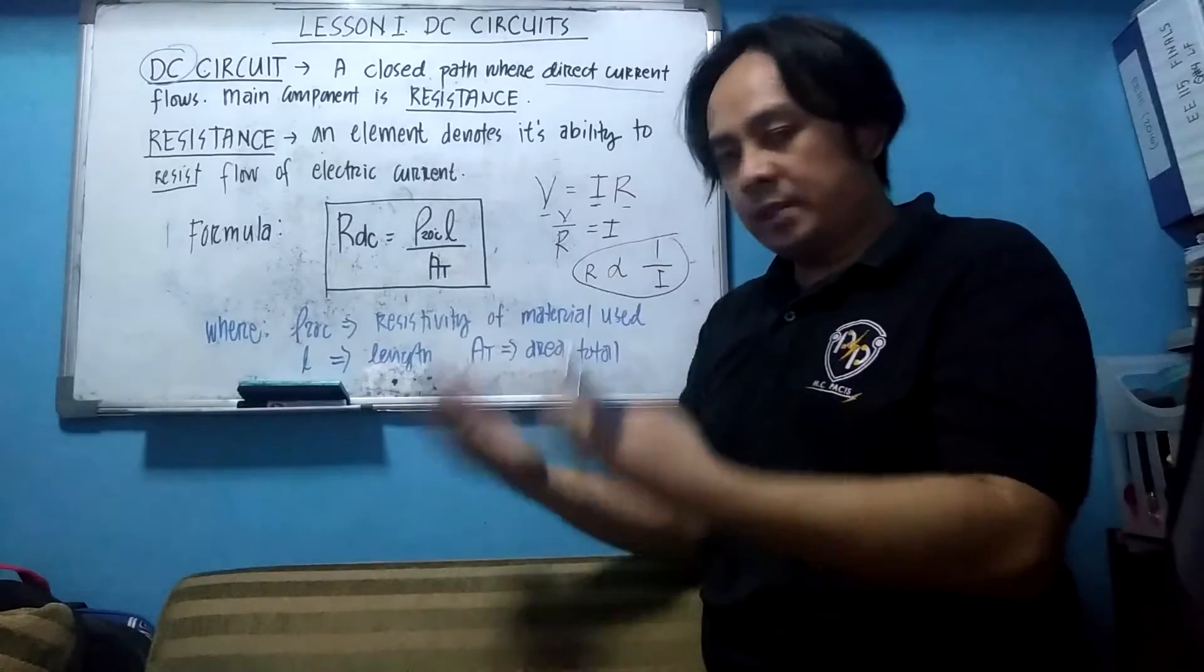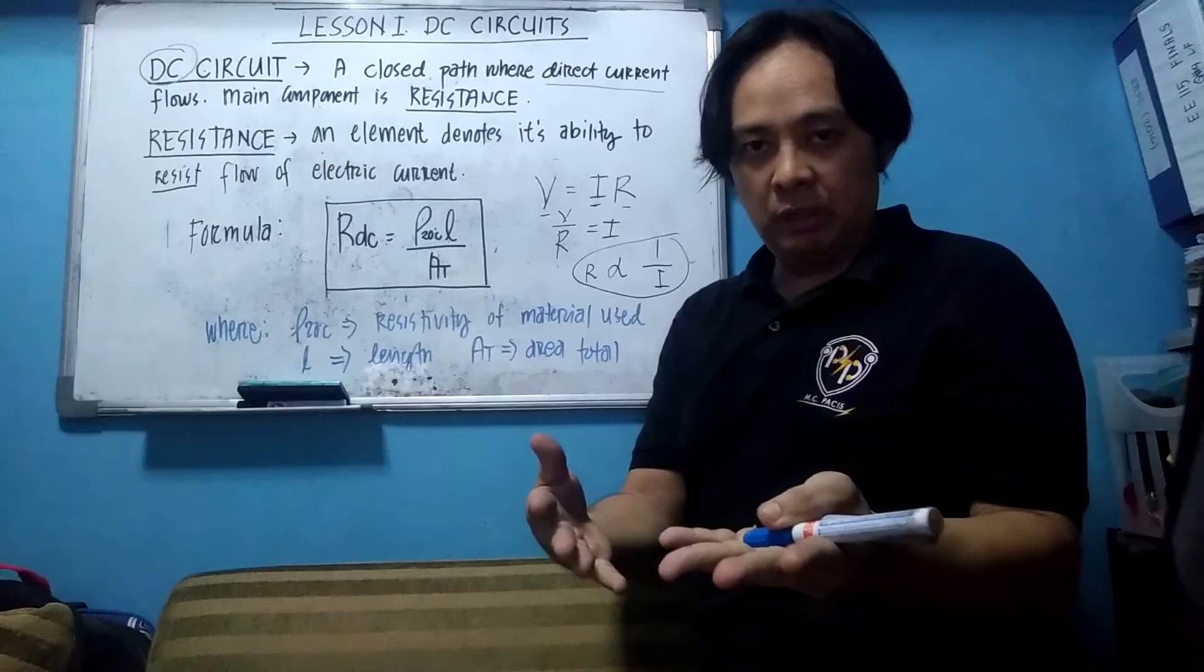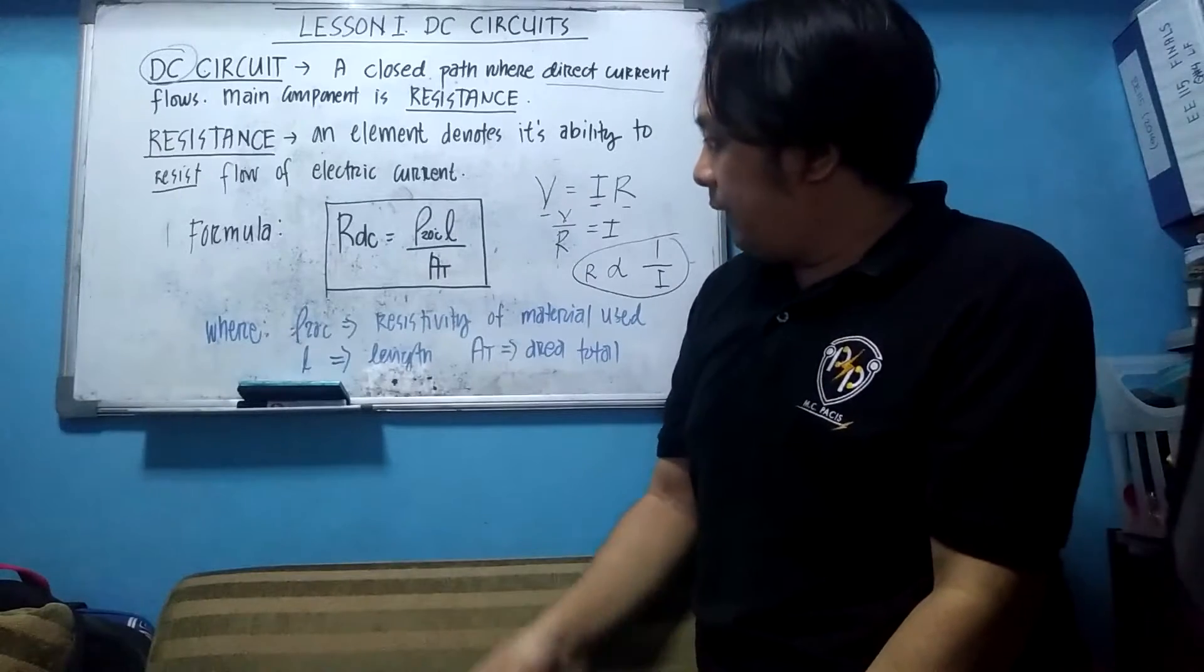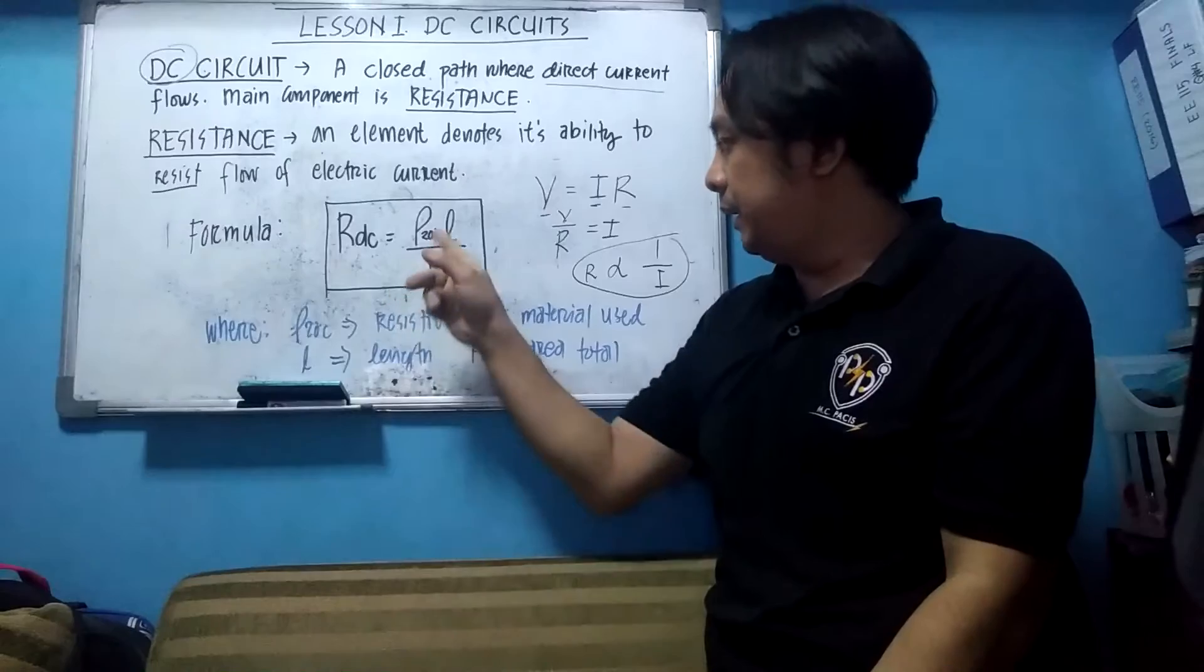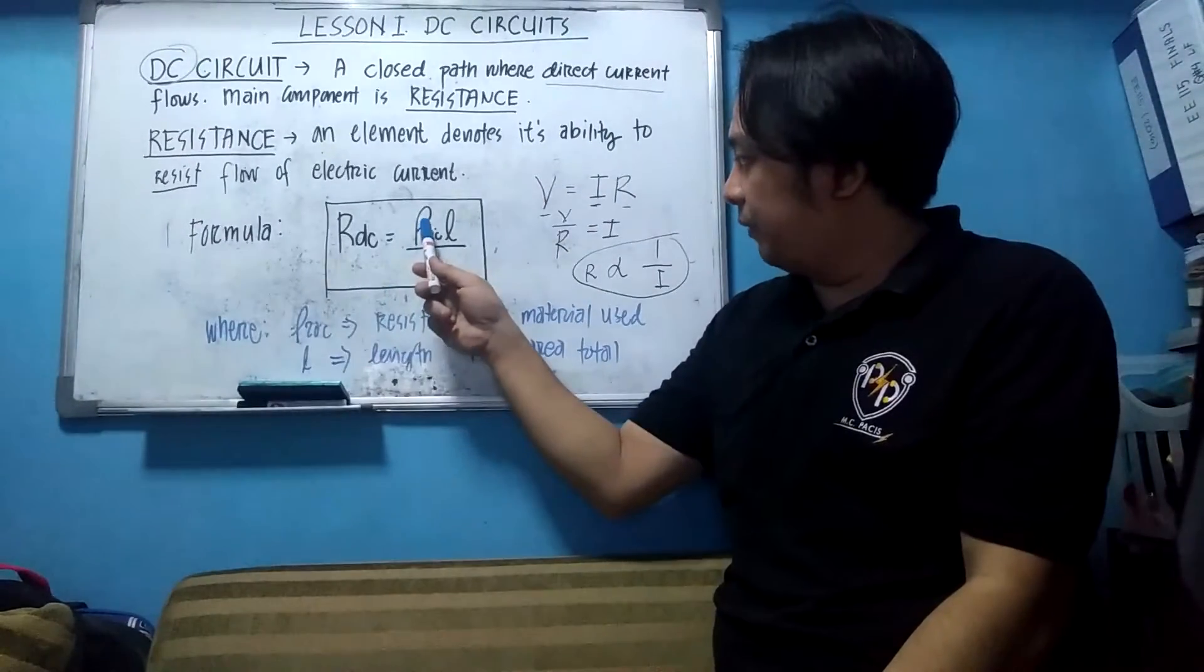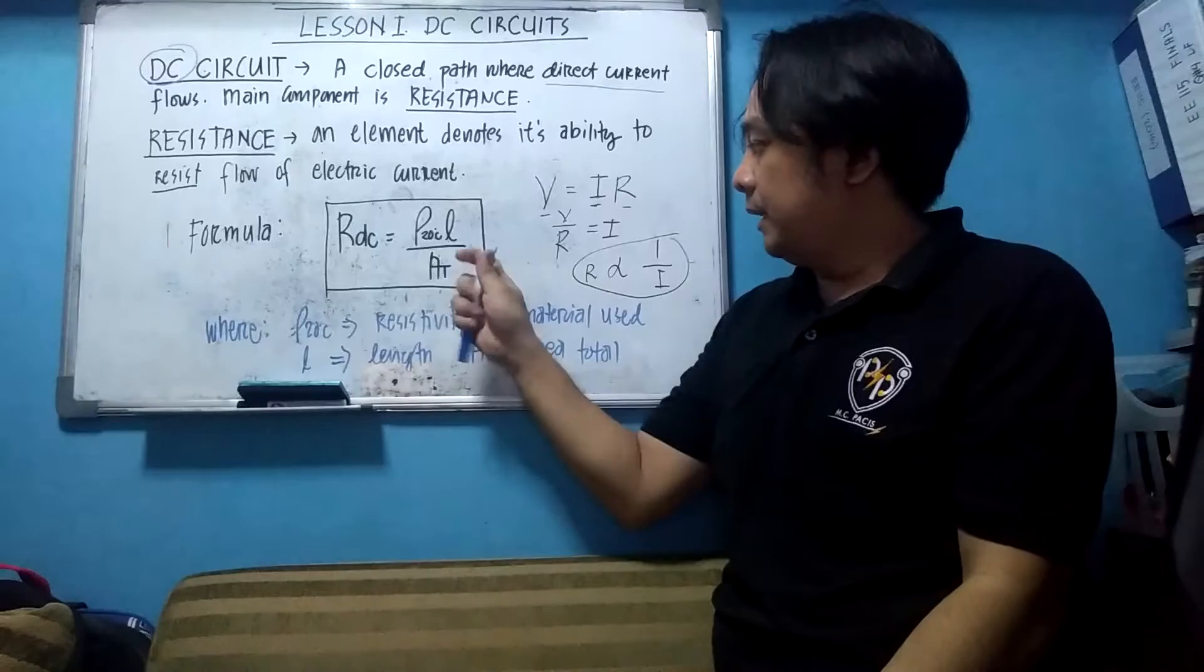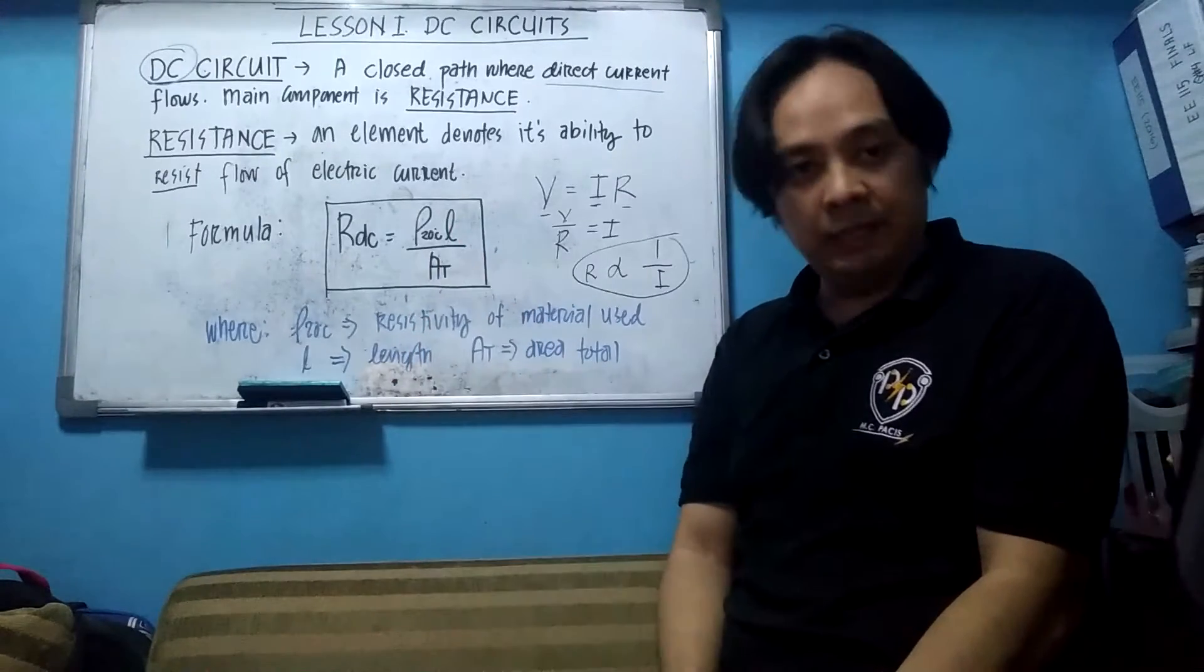Now, a resistance is also a conductor that is placed between your source and your load. Load has a different resistance, voltage, etc. And the formula for a resistance in terms of DC is simply this one. So we have here an alpha here which constitutes the resistivity of the material, the length, and the total area which is DP.